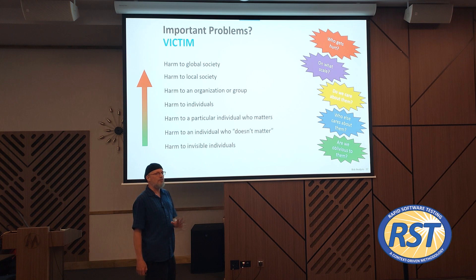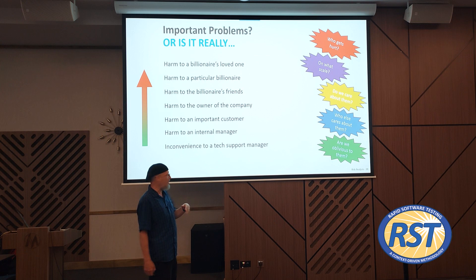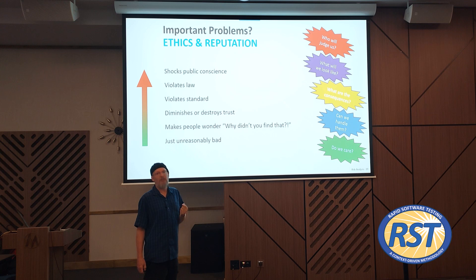It might be harm to people we haven't thought of — that we've ignored, forgotten, or are dismissing. Maybe it's harm to the loved one of a billionaire, arguably more important to the billionaire than harm to the billionaire themselves. Maybe it's harm to the billionaire's friends, the owner of a company, an internal manager, or someone we consider — rightly or wrongly — to be inconsequential. What about impact in terms of ethics or reputation? Maybe it shocks the public conscience, violates a law or regulation such that people could go to jail, or is inconsistent with a widely accepted standard.